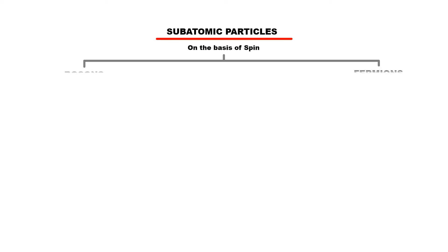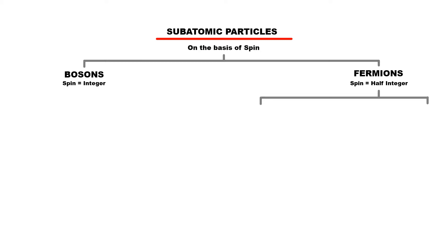Classifying subatomic particles according to their spin, the particles are of two types: particles of integer spin known as bosons, and particles of half-integer spin known as fermions. Not all fermions are the same — some fermions do not interact with the strong nuclear force and are called leptons, while some fermions do interact with the strong nuclear force and are called baryons.